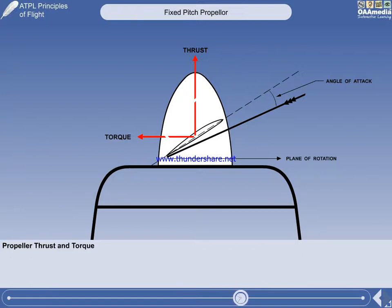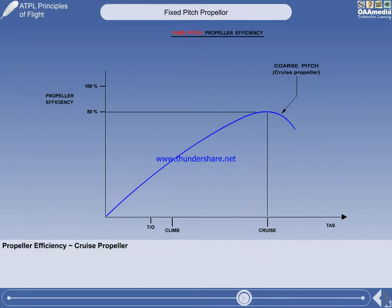Next, we'll take a look at propeller efficiency. The illustration shows a plot of the efficiency of a fixed-pitch propeller, with aircraft true airspeed increasing to the right.